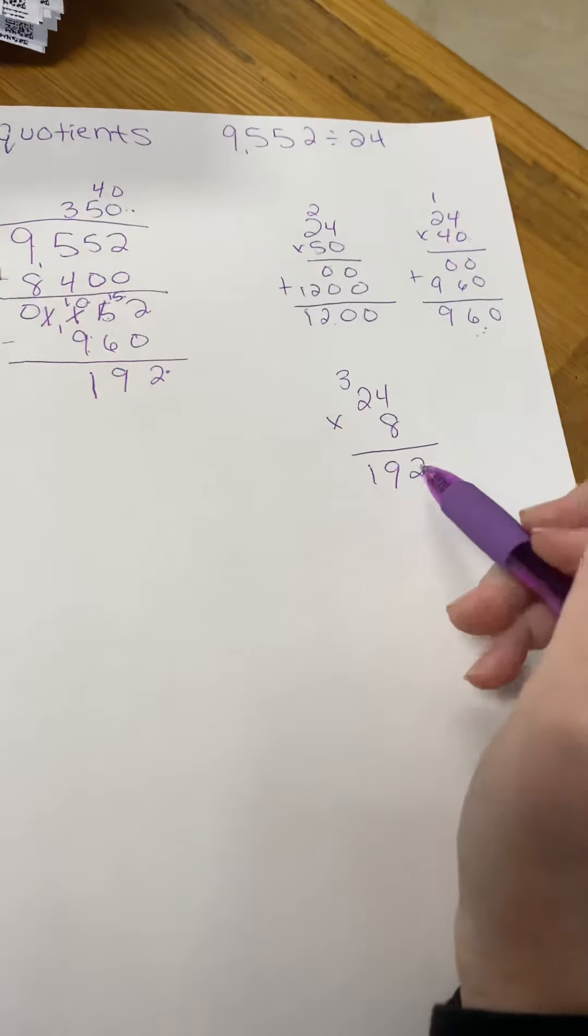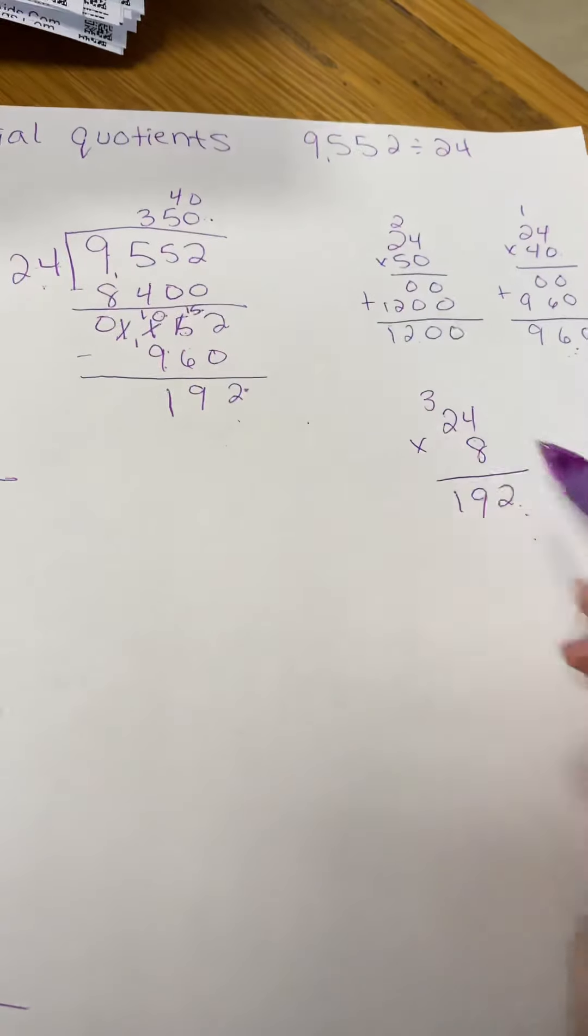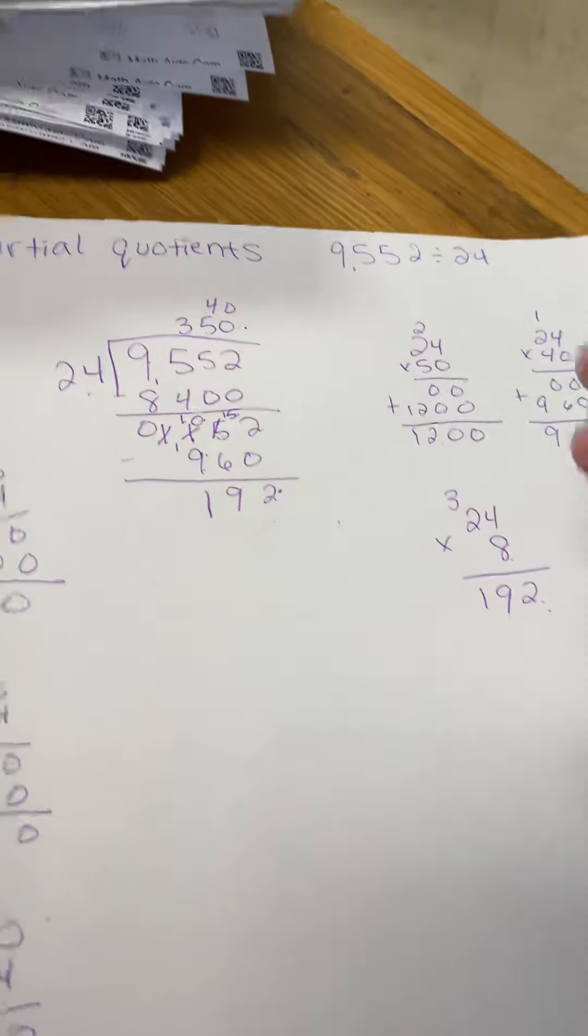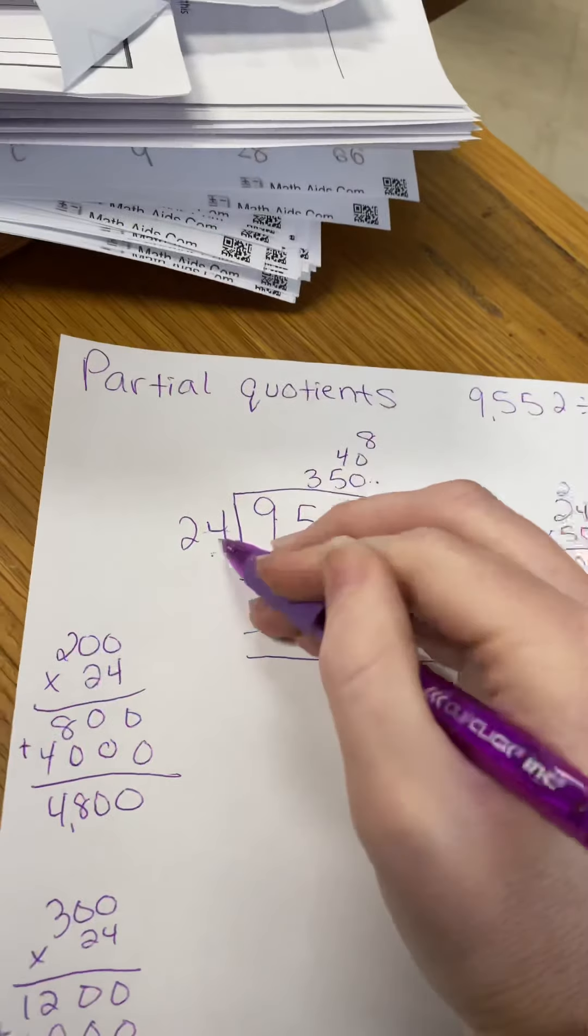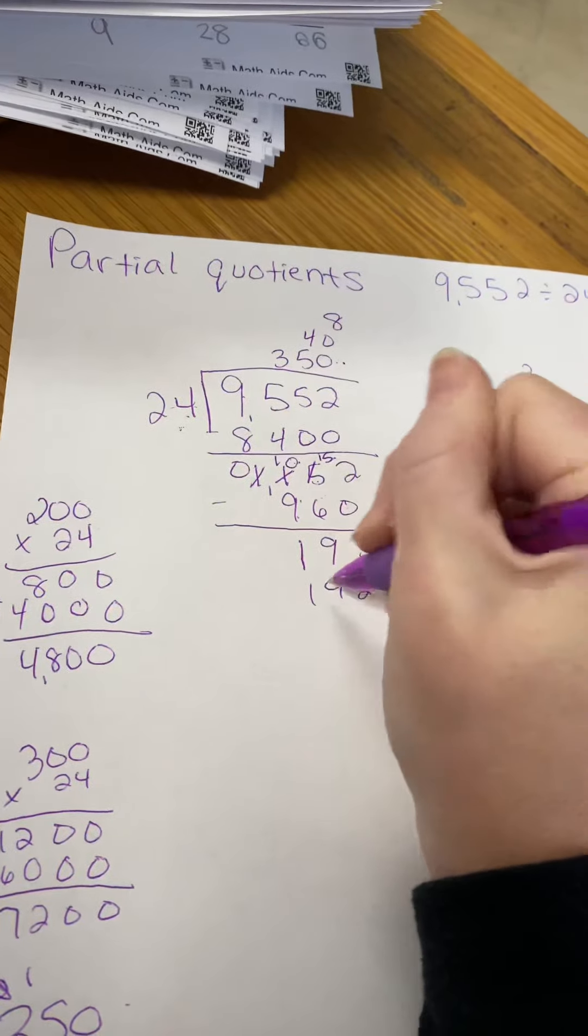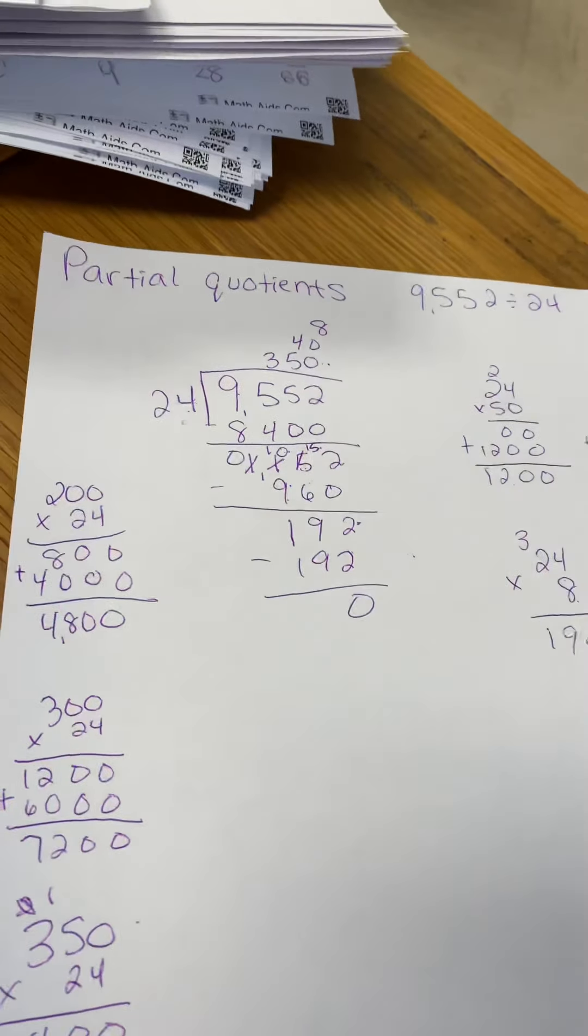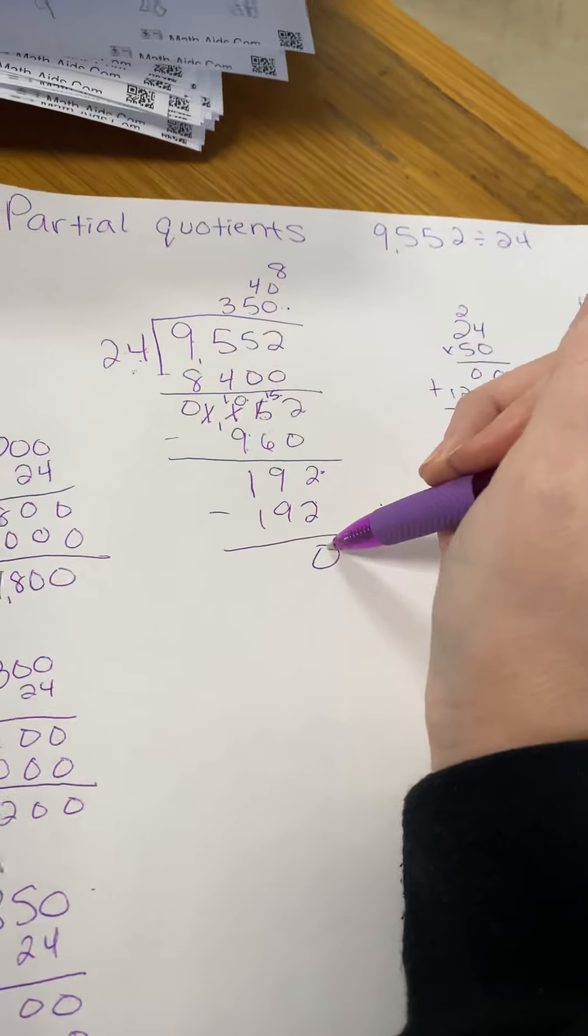Because we have the exact same, we didn't go over, we actually got the actual number. So you put your 8 at the top. 8 times 24 is 192. You subtract. And at the top, now because we have 0, you are done.